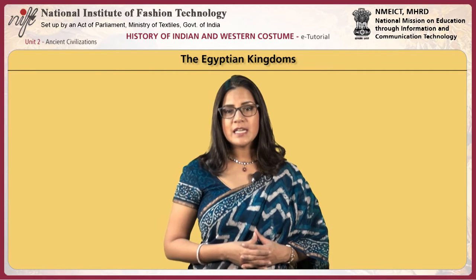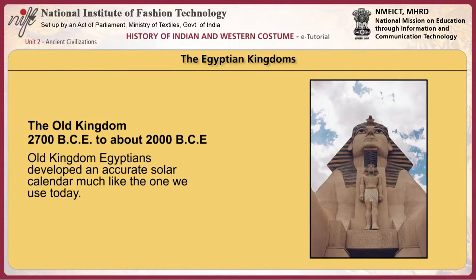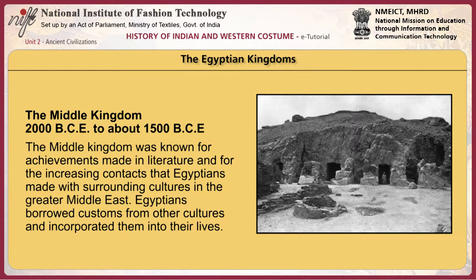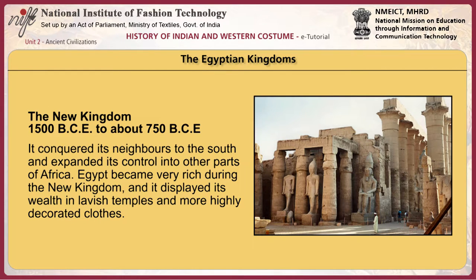Egyptian civilization is classified into three eras. Old Kingdom Egyptians developed an accurate solar calendar much like the one we use today. The Middle Kingdom was known for achievements in literature and for increasing contacts that Egyptians made with surrounding cultures in the greater Middle East. Egypt became very rich during the New Kingdom and displayed its wealth in lavish temples and more highly decorated clothes.